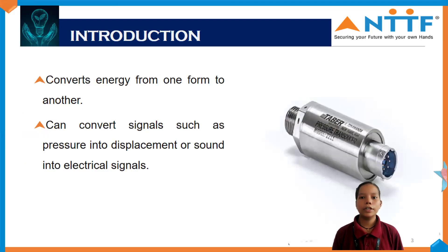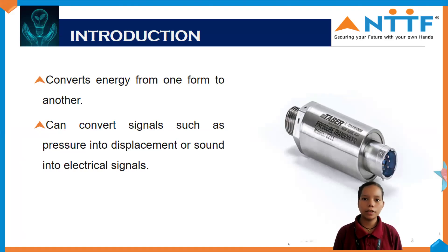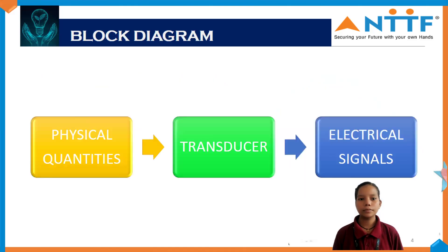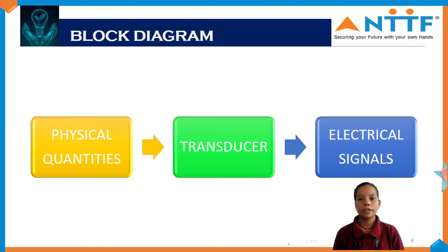The introduction about a transducer: a transducer is a device which can convert one form of energy into another form. It can convert signals such as pressure into displacement or sound into electrical signals. Here is the block diagram of a transducer — it converts physical quantities into electrical signals.